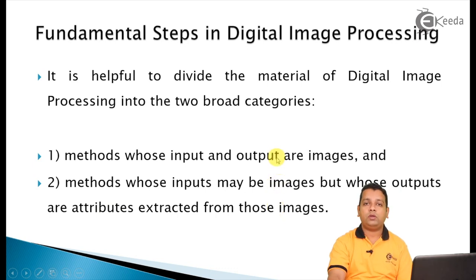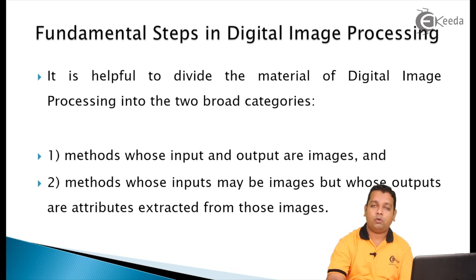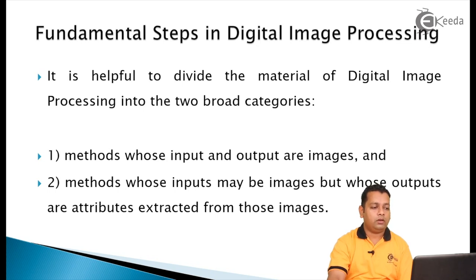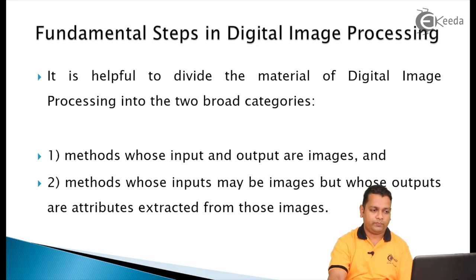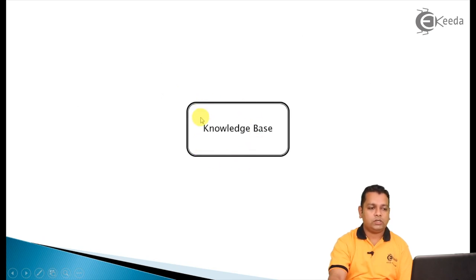In a previous lecture we defined digital image processing as digital images processed by a digital computer where input and output are both images. However, that is a limiting definition. Whether the output is an image or attribute information, it all belongs to digital image processing. Based on these two criteria we can have proper categorization and examine the fundamental steps.